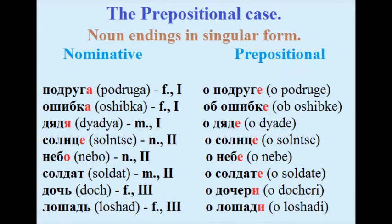Girlfriend: подруга — о подруге. Error: ошибка — об ошибке. Uncle: дядя — о дяде. Sun: солнце — о солнце.